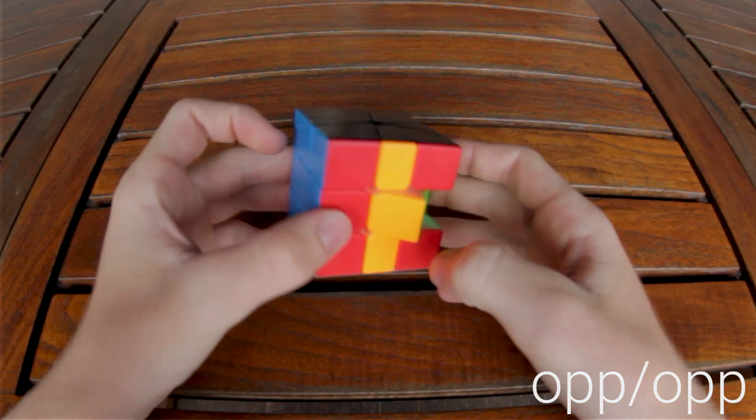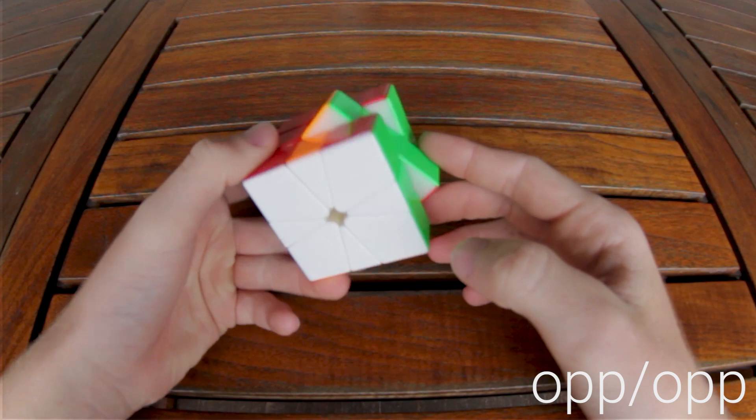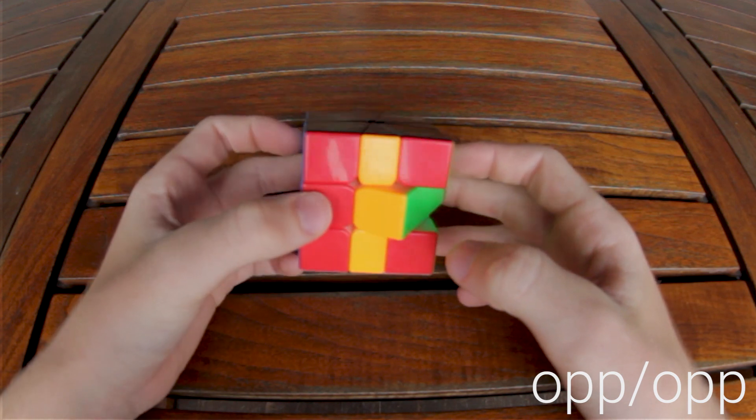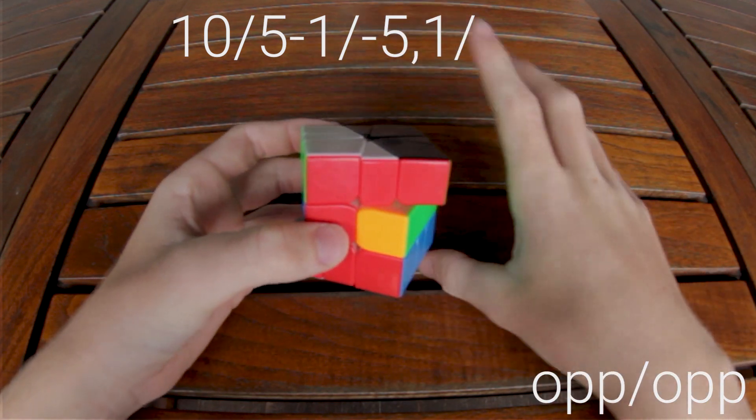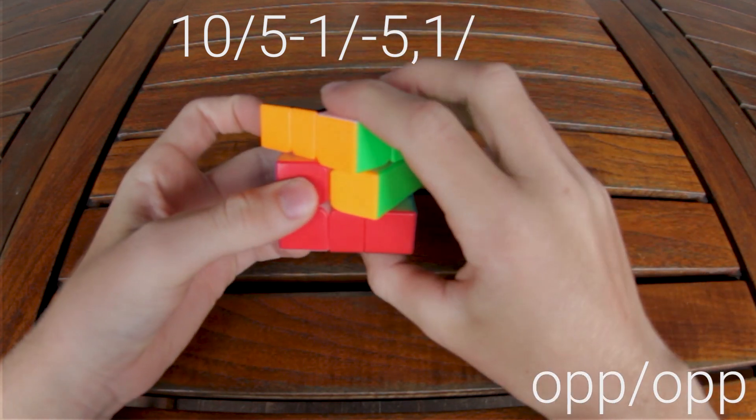The slice optimal version of this algorithm doesn't require a flip. And that's just 1, slash, 5, negative 1, slash, negative 5, 1, slash.